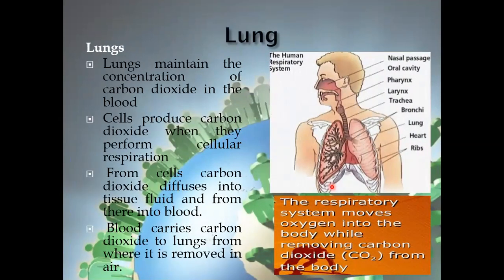Now the second organ is the lung. What do the lungs do? The lungs maintain the concentration of carbon dioxide in the blood. All the carbon dioxide is produced as a result of cellular respiration. The CH bonds present within glucose are broken down, and the energy located within the CH bonds is released. A huge amount of energy is released by breaking the CH bonds as a result of cellular respiration, and carbon dioxide is also produced.